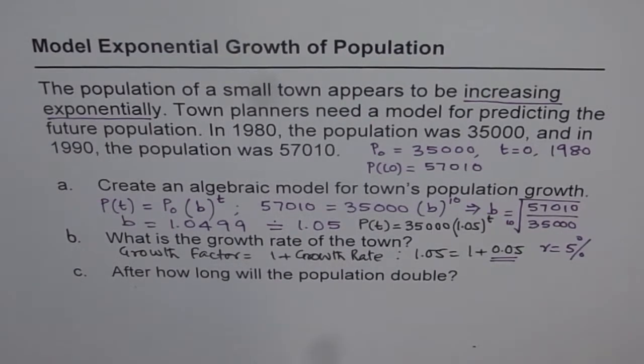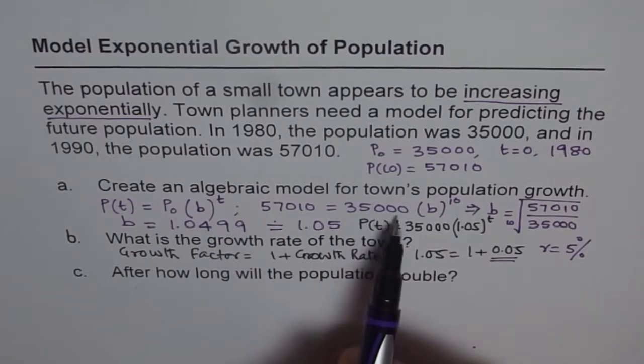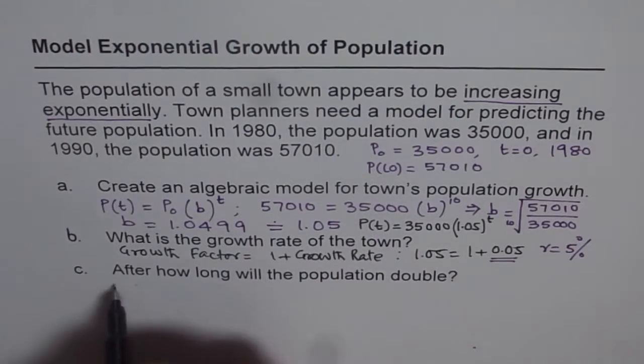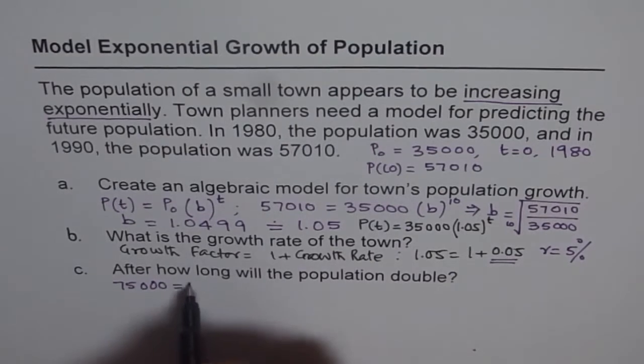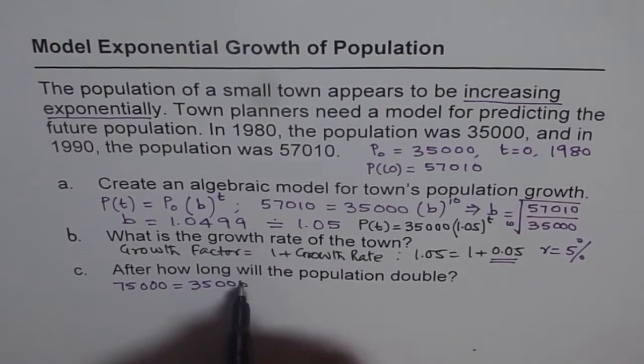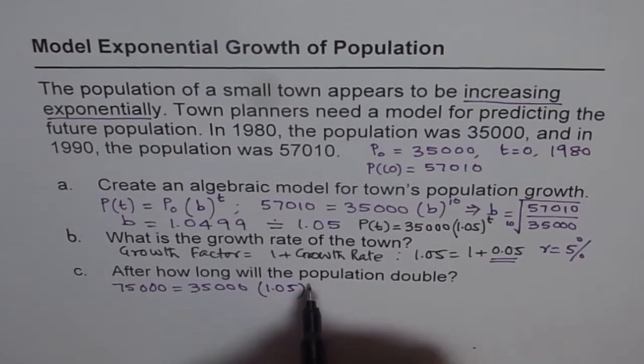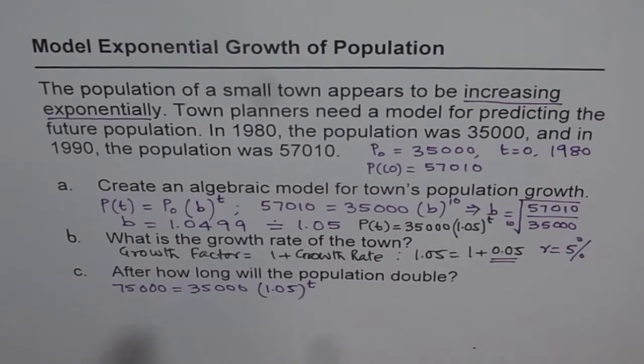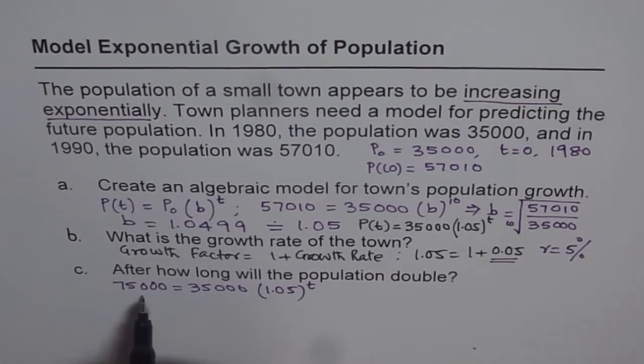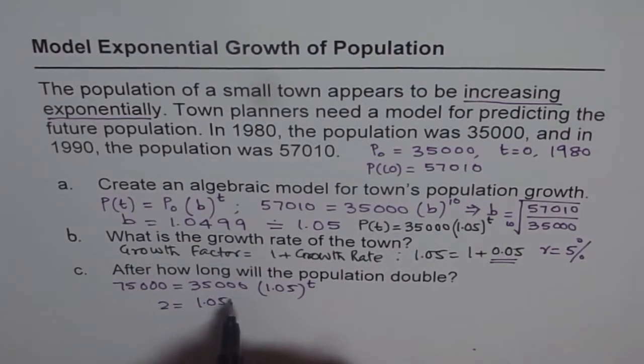Part C is after how long will the population double. Now doubling of the population means that from 35,000 it becomes 70,000. So we can start with this equation as P(t) equals to 70,000 equals to 35,000 times b which we know is 1.05 to the power of t and we need to find what t is. To find t we can divide, so we have 2 equals to 1.05 to the power of t.